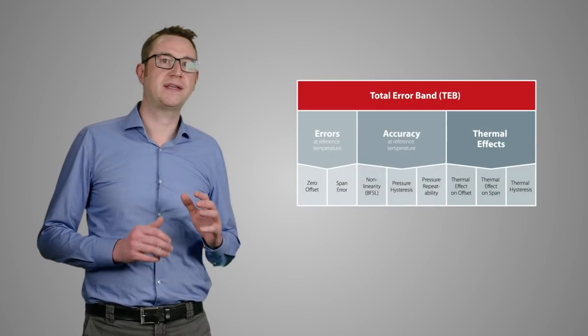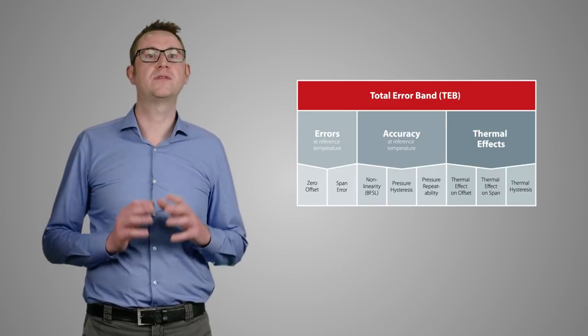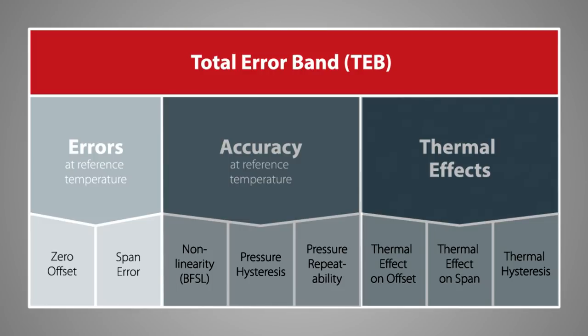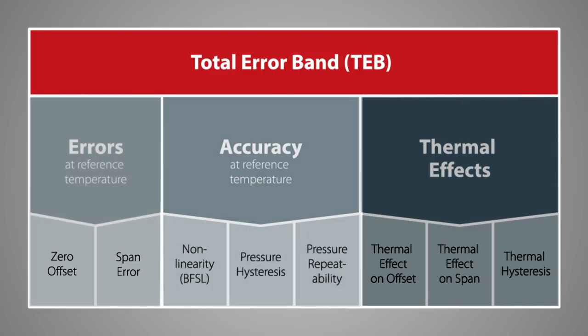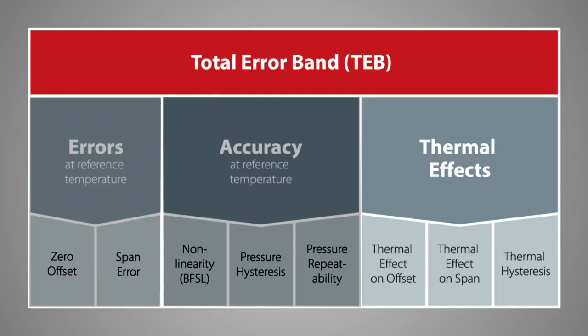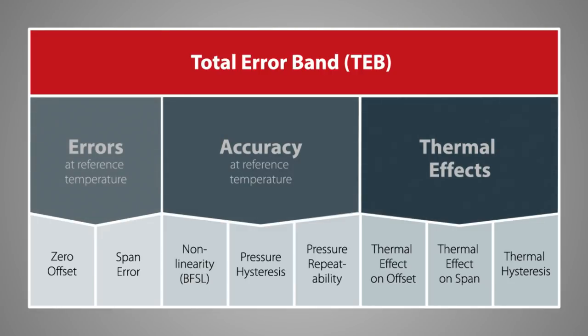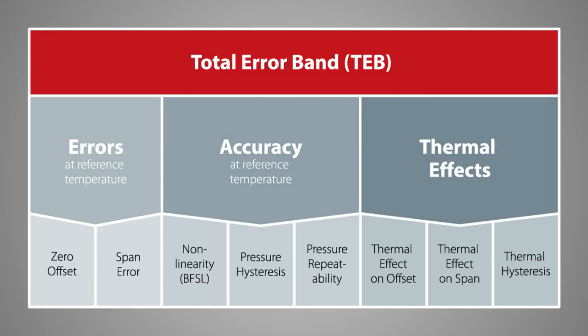To make this easier, we have split the overview into three different groups. To the left, we have errors at reference temperature; in the middle, accuracy; and to the right, thermal effects. Each of these groups contains different influence quantities that should be taken into account. Let's dive into the three groups to give a more detailed explanation and definition of these errors and quantities.